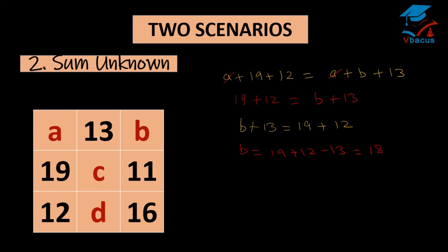So here the value of B is 18. Now we can find the sum of column 3. Sum of column 3 is 18 plus 11 plus 16 is equal to 45. Now we can find the value of A. Value of A is 45 is the sum minus 19 minus 12 that is 14. So value of A is 14.